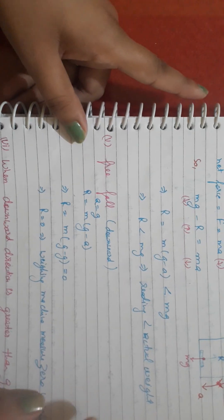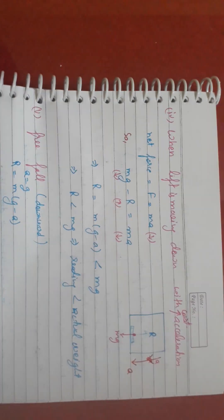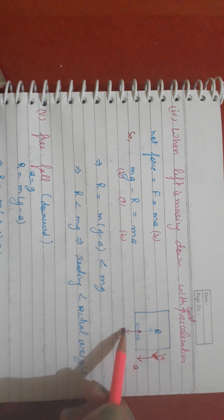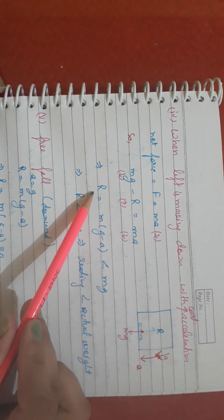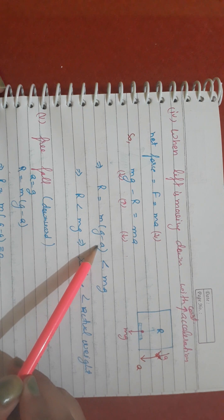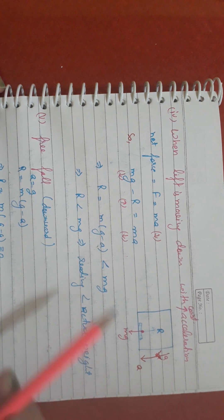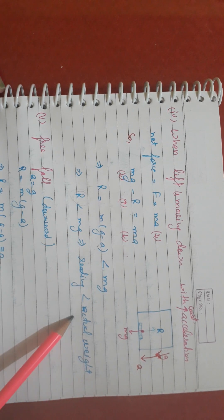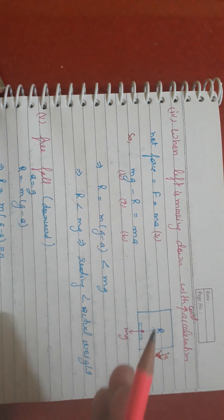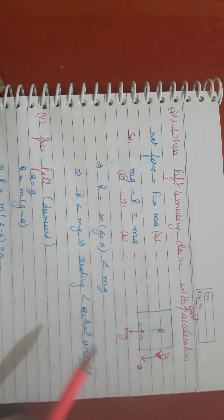The fourth case is when the lift moves downward with constant acceleration. This time the total motion is downward, so the net force mg minus R equals Ma. Calculating, R equals m(g minus a), which is less than mg. This means the reading of the weighing machine will be lower than the actual weight.